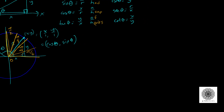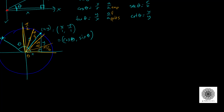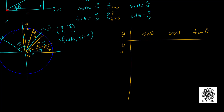You'll need to know the trig values of those common angles. Setting up a table with θ, sin θ, cos θ, and tan θ for 0, π/6, π/4, π/3, and π/2 — there's an easy pattern for sine: start with √0/2, then √1/2, √2/2, √3/2, √4/2. Simplifying: √0/2 = 0, √1/2 = 1/2, √2/2 and √3/2 stay, and √4/2 = 1.